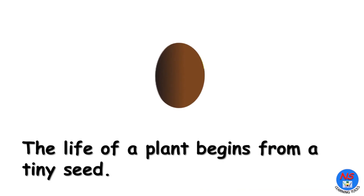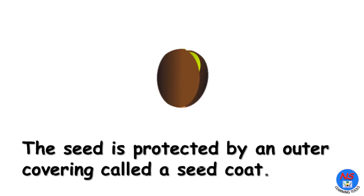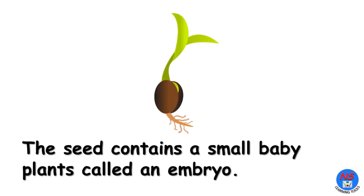The life of a plant begins from a tiny seed. The seed is protected by an outer covering called a seed coat. The seed contains a small baby plant called an embryo.